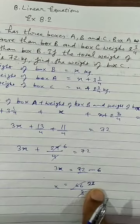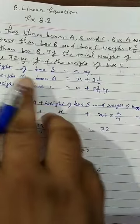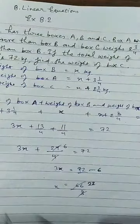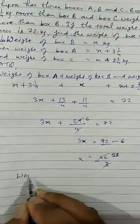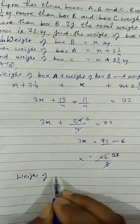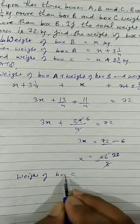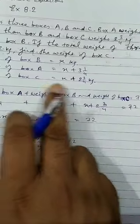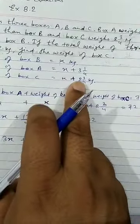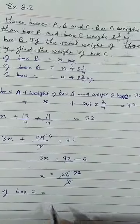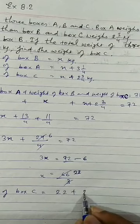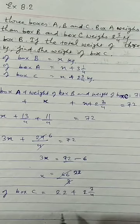So the value of X is 22. What the question is asking? They are asking find the value of box C. So we will write here, weight of box C equals to, we have assumed weight of box C as X plus 2 and 3 upon 4 kg. It means that 22 plus 2 and 3 upon 4 kg.